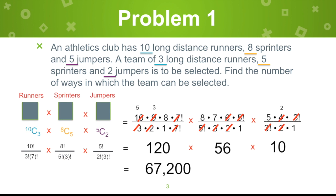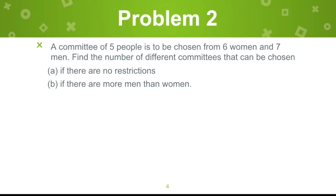So imagine — there's going to be 67,200 teams satisfying this condition. Now let's jump to problem number 2. A committee of 5 people is to be chosen from 6 women and 7 men. Find the number of different committees that can be chosen if there are no restrictions, and if there are more men than women. You know this is a combination problem because of keywords like: chosen, selected, committee, a team, a group — those serve as hints to use the combination formula.